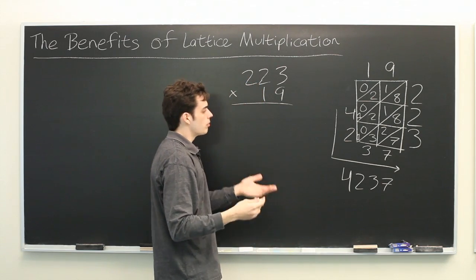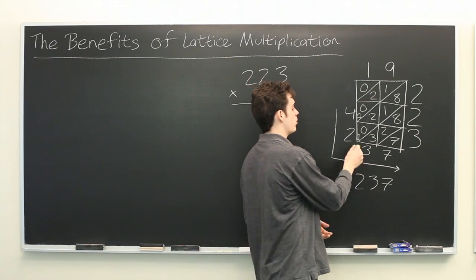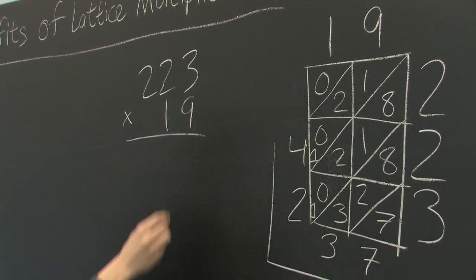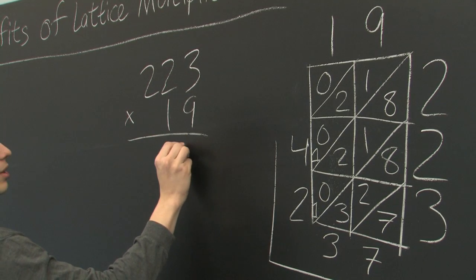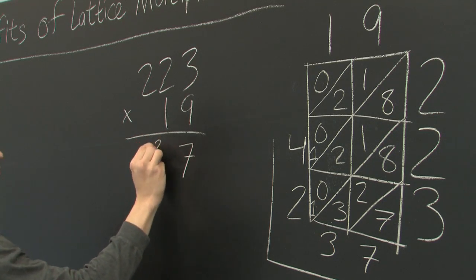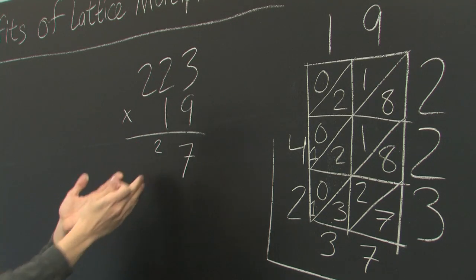Also it is arguably a little bit easier to keep track of where you're carrying your numbers over. For example in this notation 9 times 3 is 27. It's not clear what is the best way to carry over this 2. Should we do it here? It can be somewhat confusing.